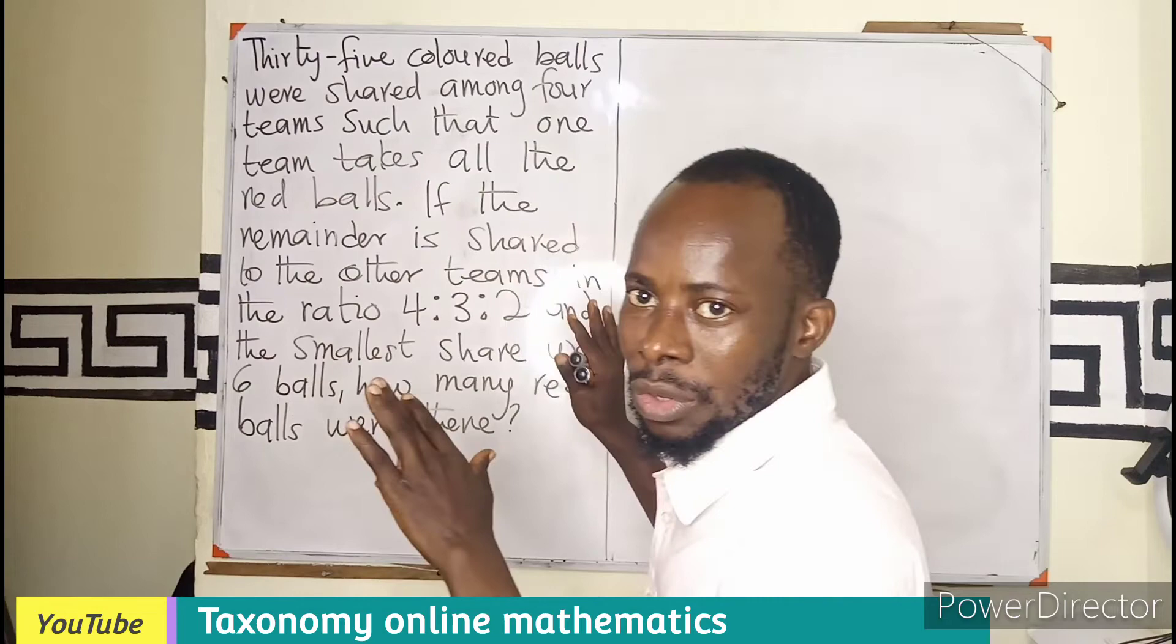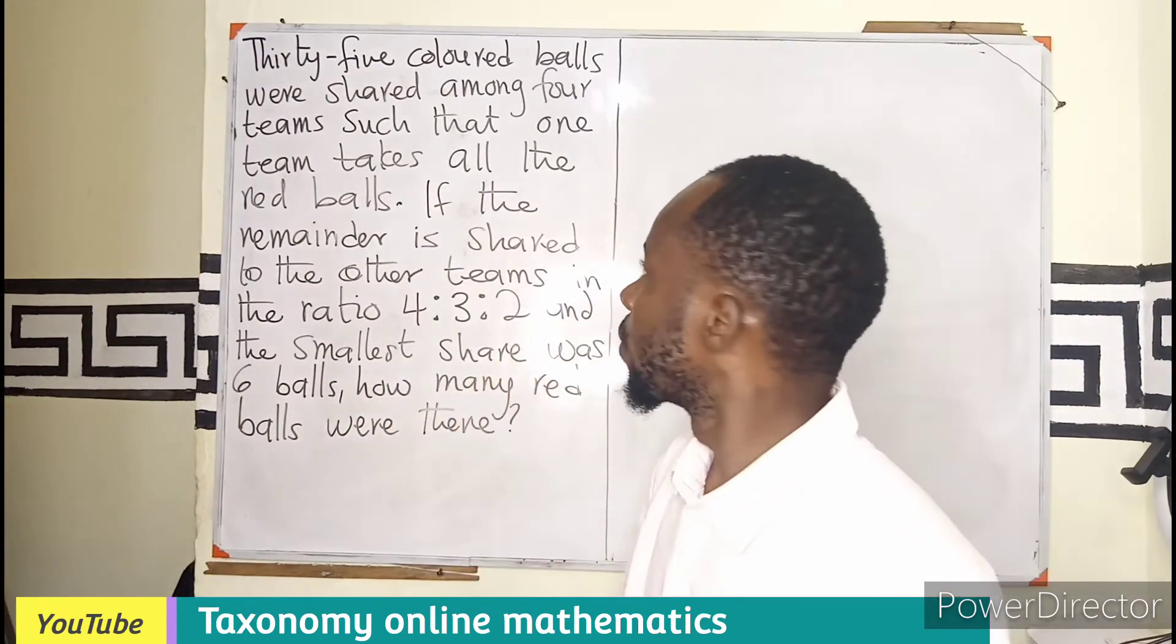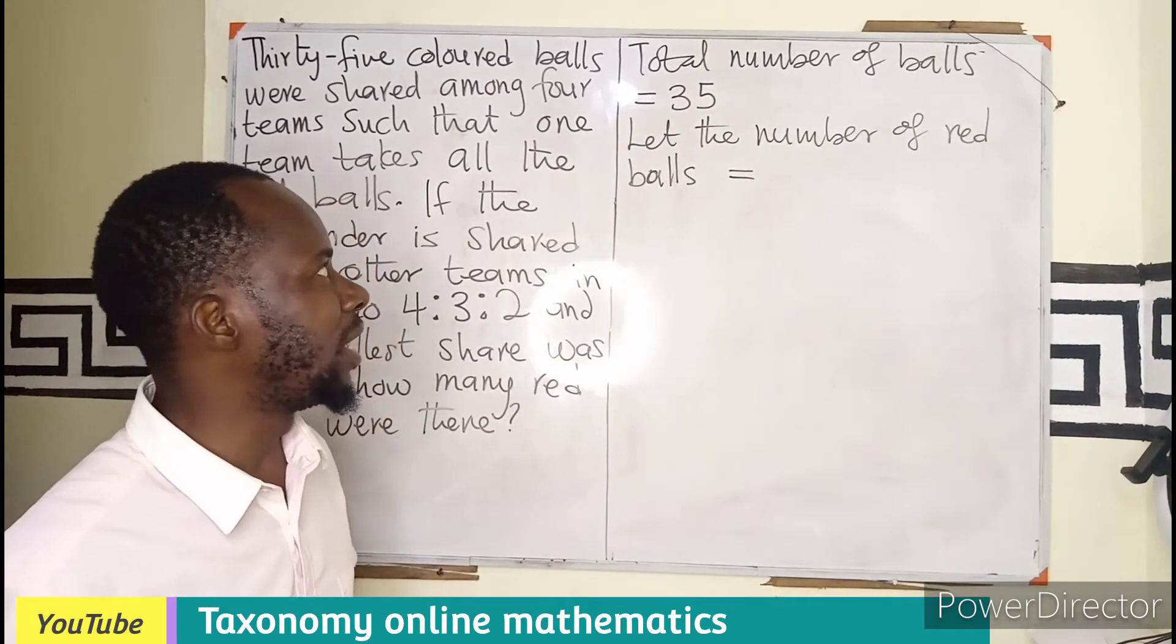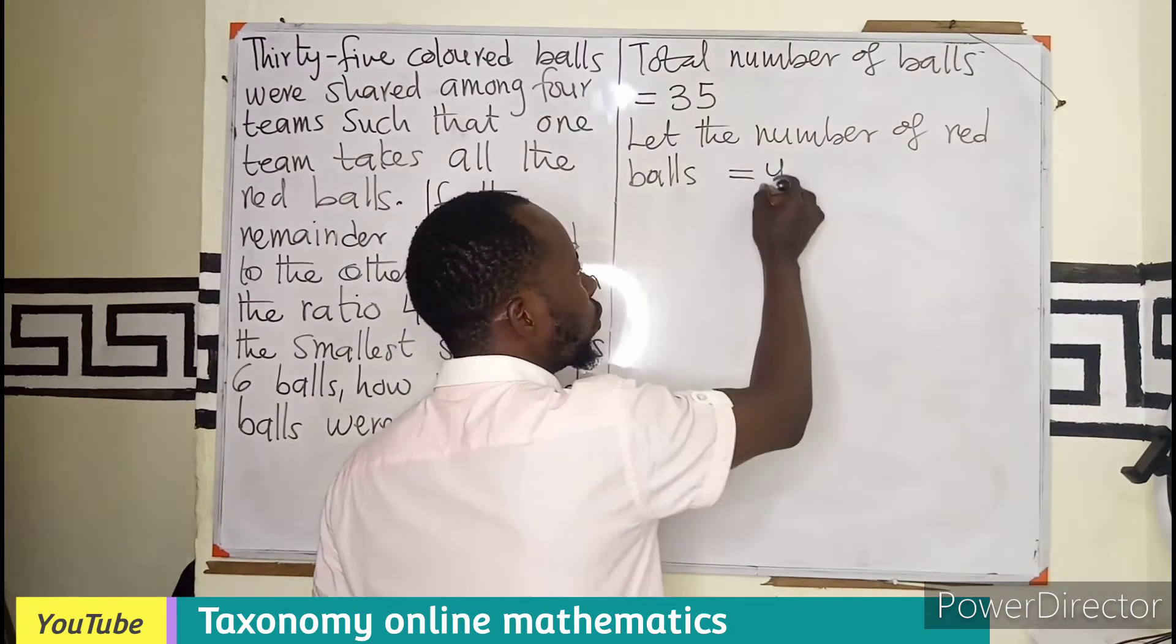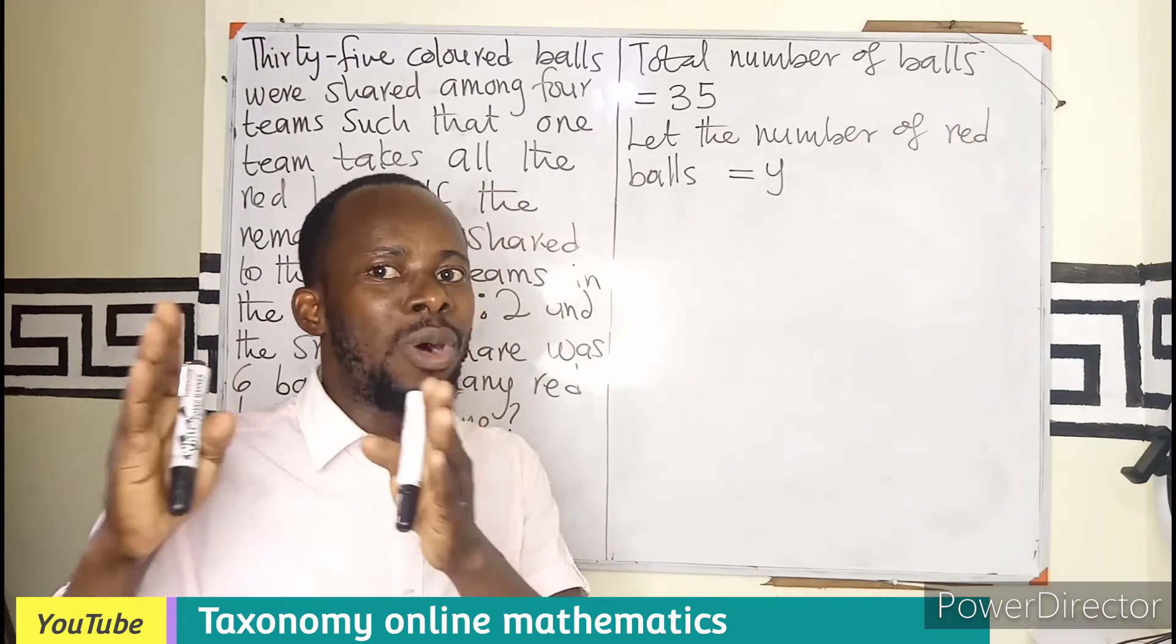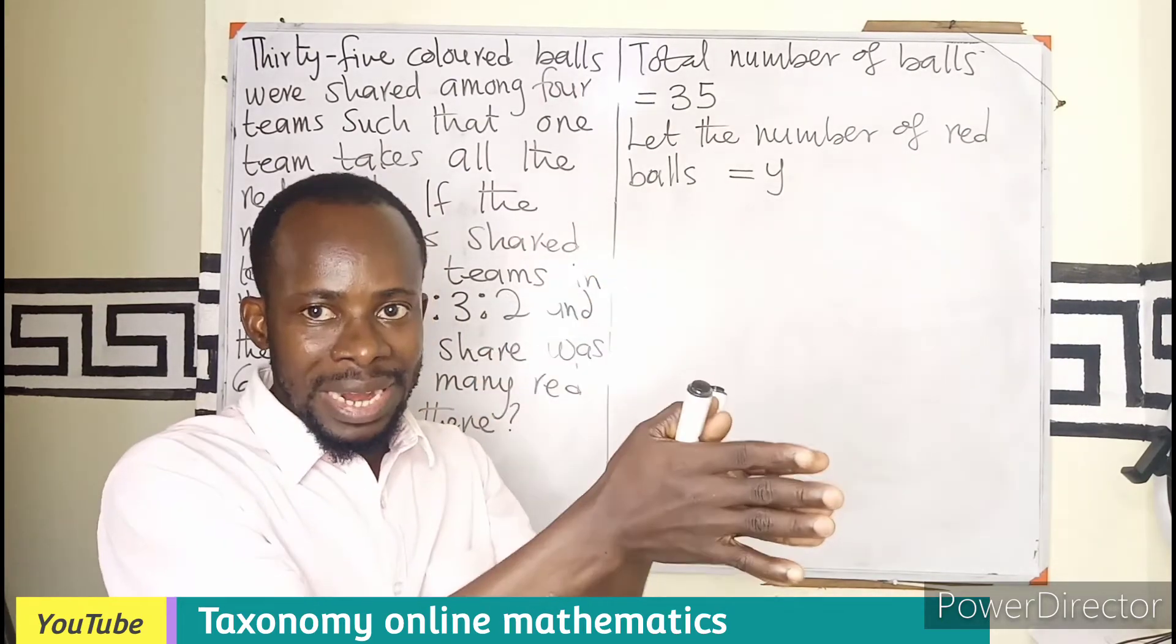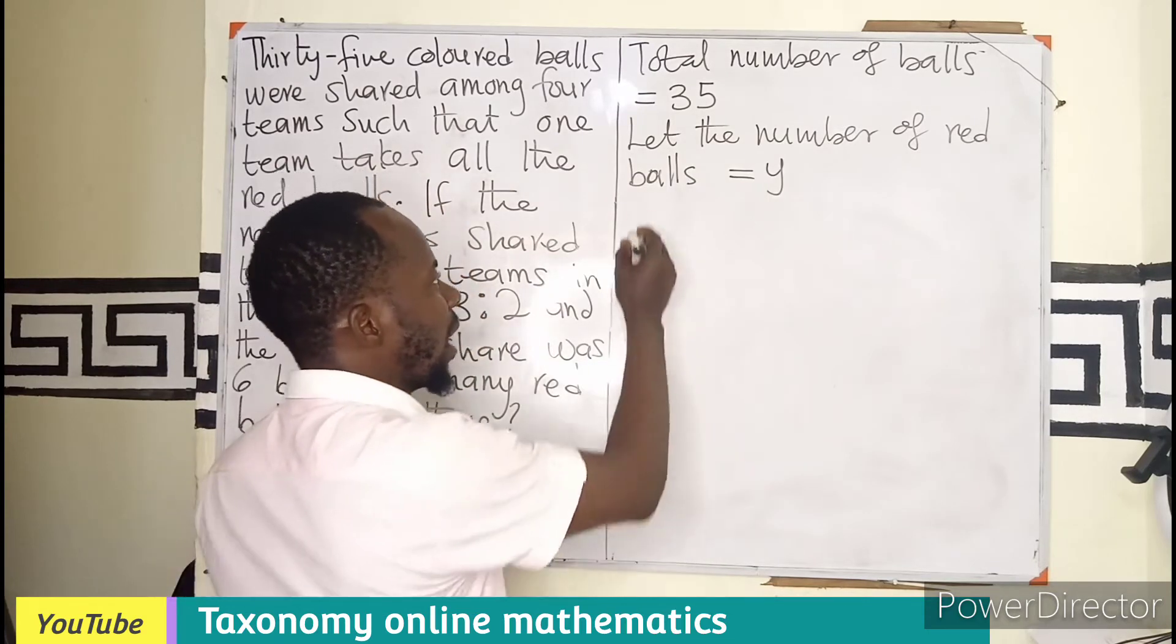But in this case, we don't know. So we know in one problem, if we don't know a number, we use a variable. So now we know that the 35 balls is total. Since we don't know how many red balls we have, we let that become a variable Y. So we need to find remainder.